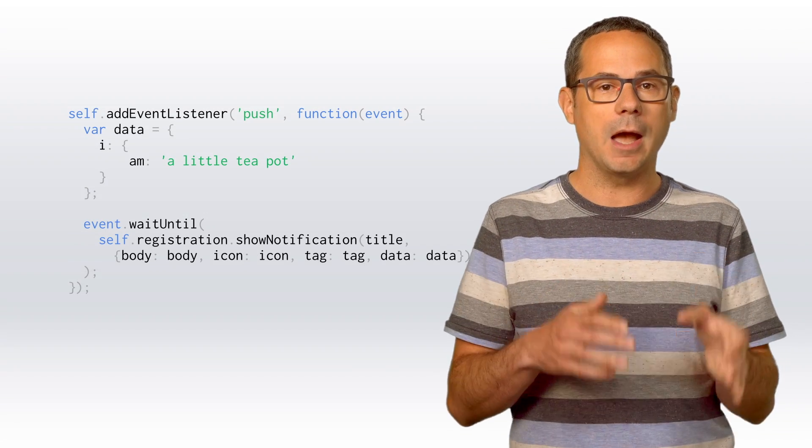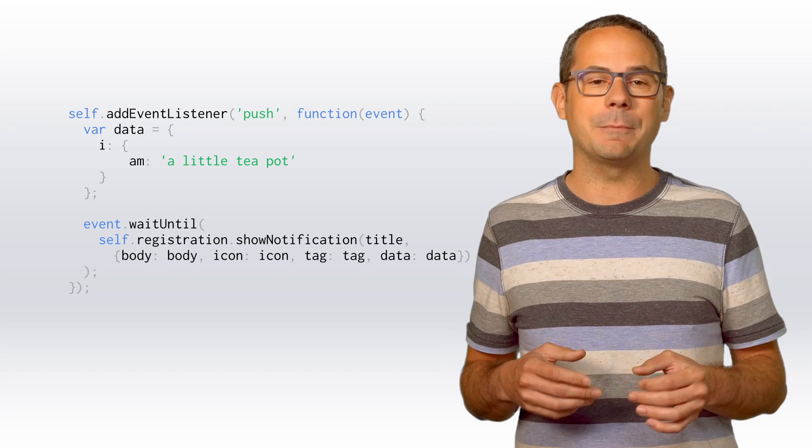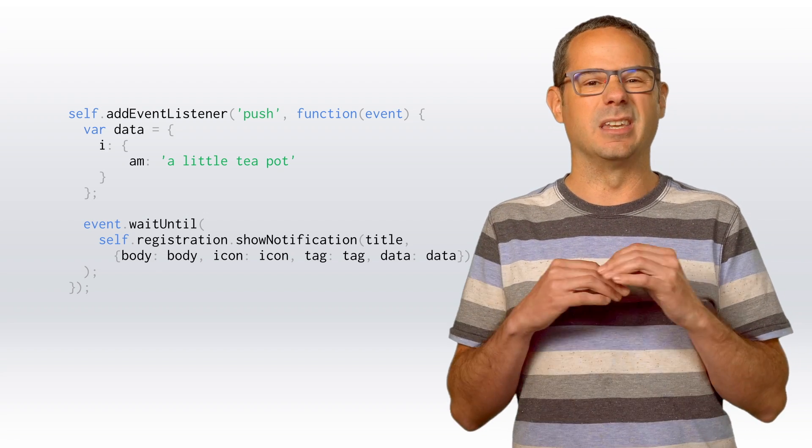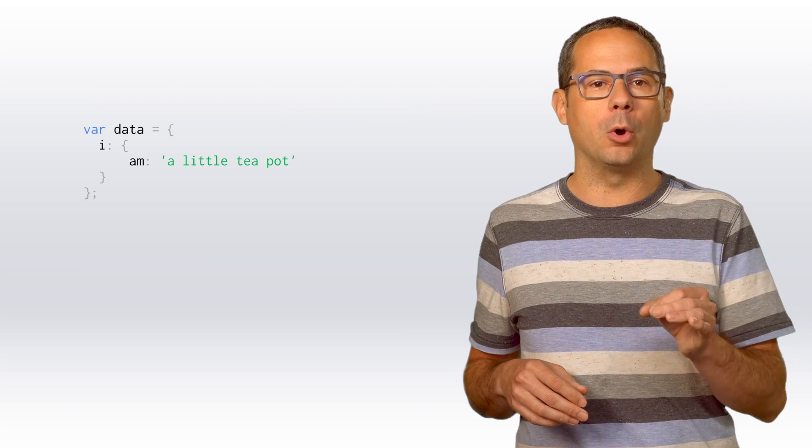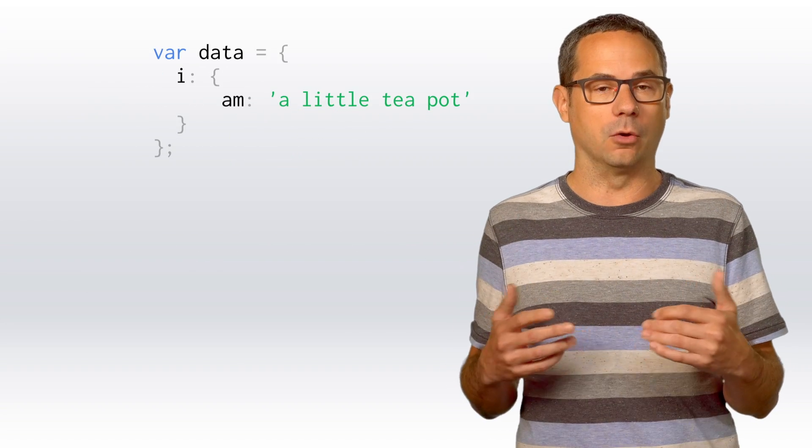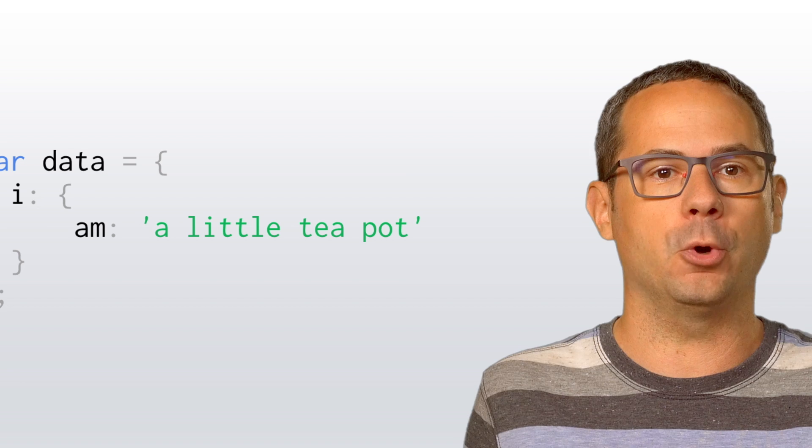One of the more useful updates is the addition of notification data, which makes it possible to attach a JavaScript object to the notification, which can be read when the user clicks on the notification. In the past, if you wanted to do this, it was rather ugly — you could either store the data in the icon URL or use something like IndexedDB. Now, we can simply pull the notification object out of the notification.